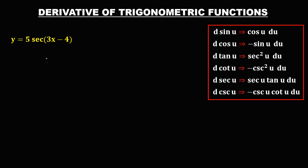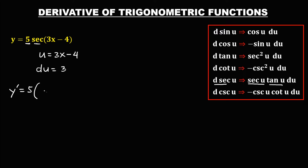For this given, u is 3x minus 4, and du — the derivative of u — is 3. To find the derivative, since we have a constant, just bring down the constant, then times the derivative of secant. The derivative of secant is secant u times tangent u, so we have secant(3x minus 4) times tangent(3x minus 4), times du.